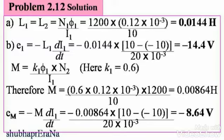Now calculate the EMFs induced in both coils. E₁ = −L₁ × dI₁/dt = −0.0144 × (10 − (−10)) / (20×10⁻³) = −14.4 Volts. Mutual inductance M = K × φ₁ × N₂ / I₁, where K = 0.6 (60% flux linkage). So M = 0.6 × 0.12×10⁻³ × 1200 / 10 = 0.00864 Henry.